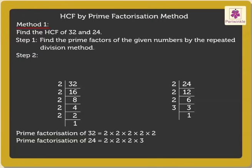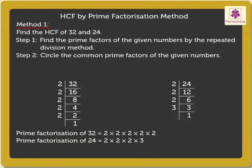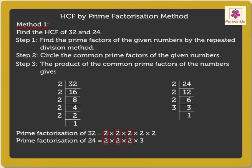Step 2: Circle the Common Prime Factors of the given numbers. Here, the Common Factors are 2, 2, and 2. Step 3: The product of the Common Prime Factors of the numbers gives the HCF. Thus, the HCF of 32 and 24 is equal to 2 × 2 × 2 = 8.